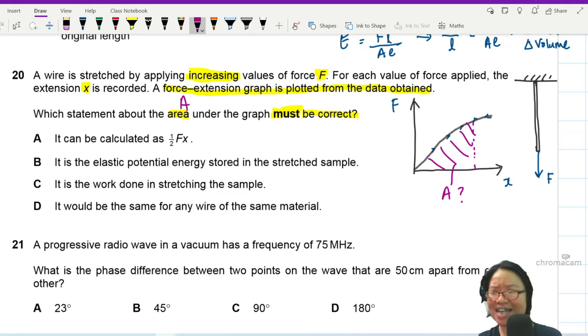Can be calculated as half Fx? Nope, because you don't know whether this wire will obey Hooke's law. So this one is no. Why? Because wire may not obey Hooke's law.